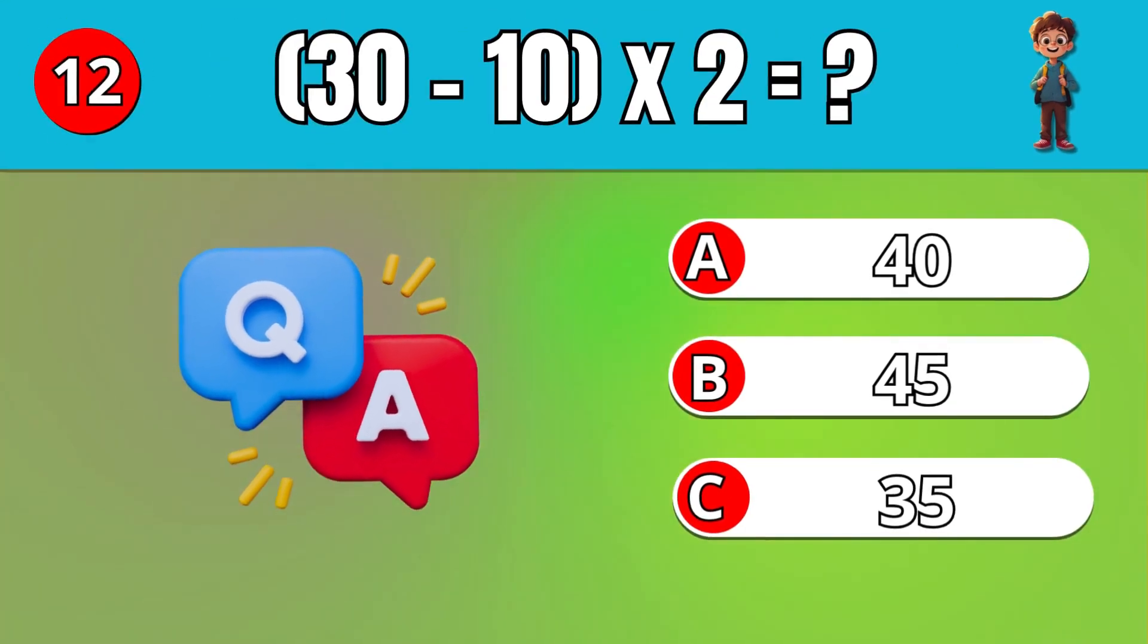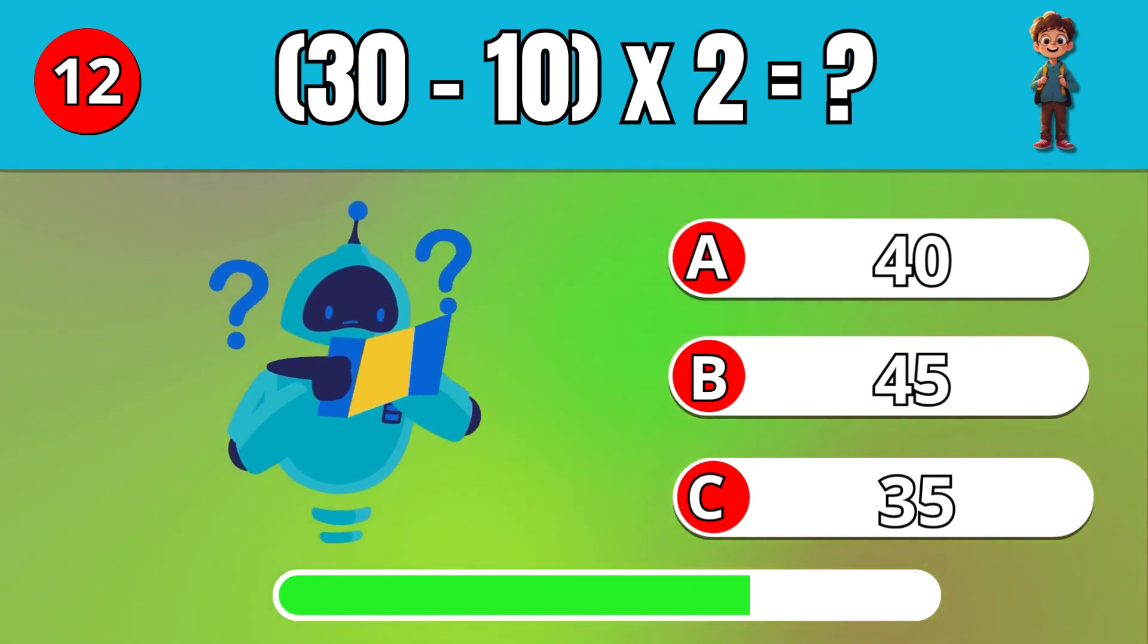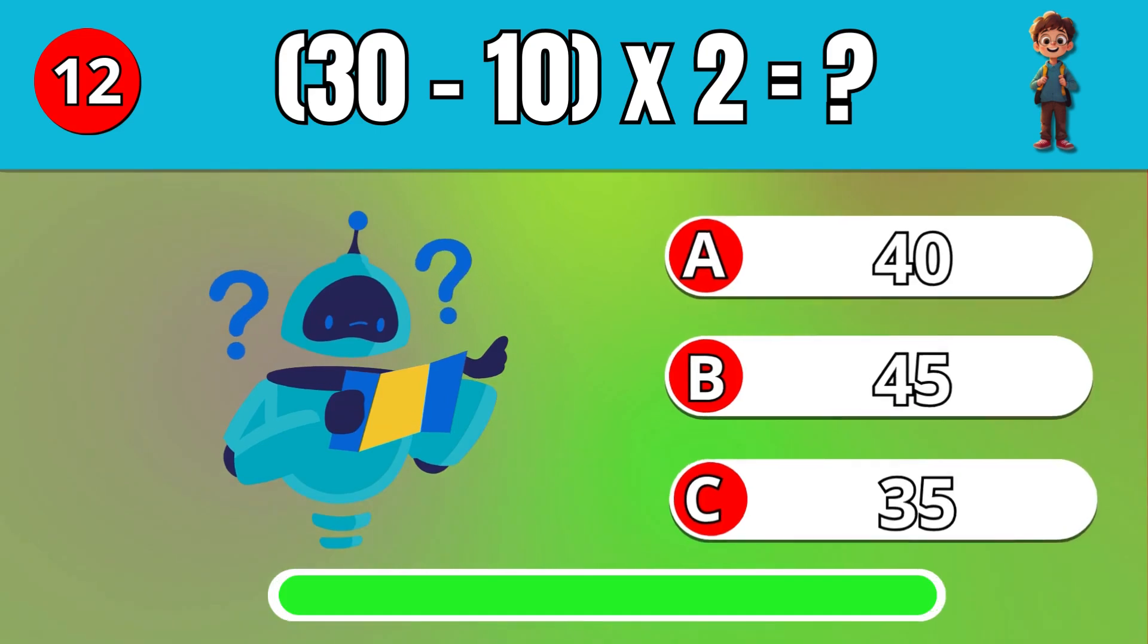Subtract 10 from 30, then multiply by 2. A. 40.